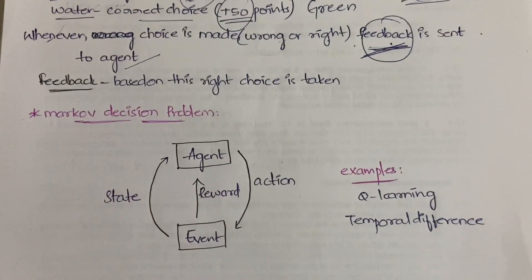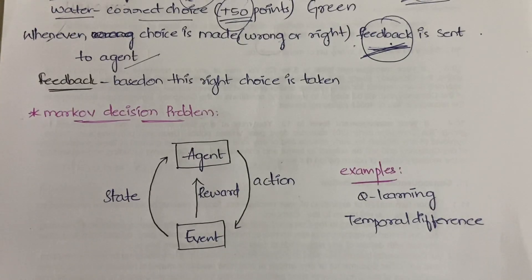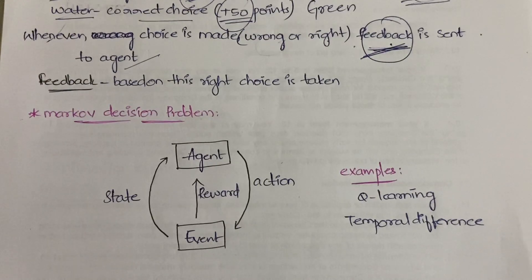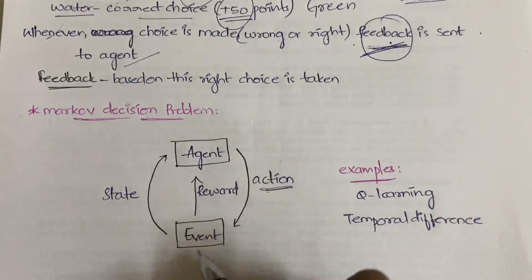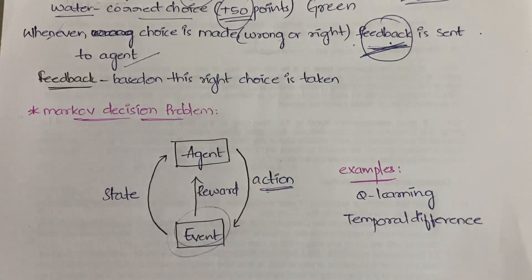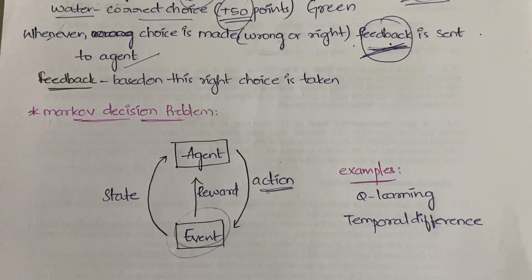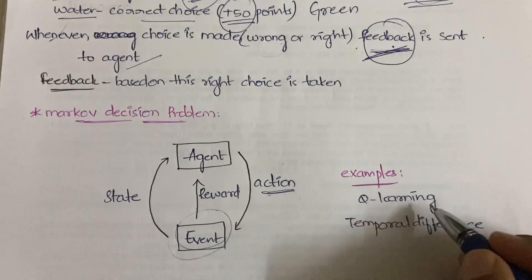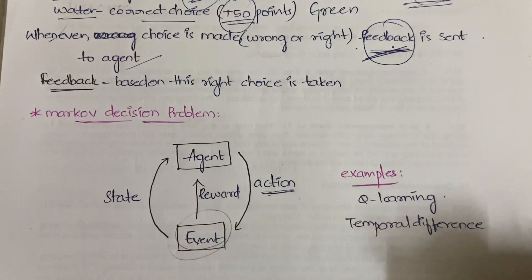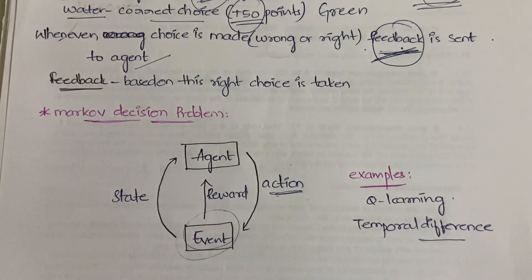Now I'll explain Markov's Decision Problem. In the next video we'll learn about Q-learning. Markov's Decision Problem: an agent will do an action, and because of that action an event happens. That event will have a state — whether it is a positive, correct state or a negative, wrong action. If there are any changes, we modify according to what needs to be implemented. Examples of this are Q-learning and temporal difference, which I'll cover in upcoming videos.